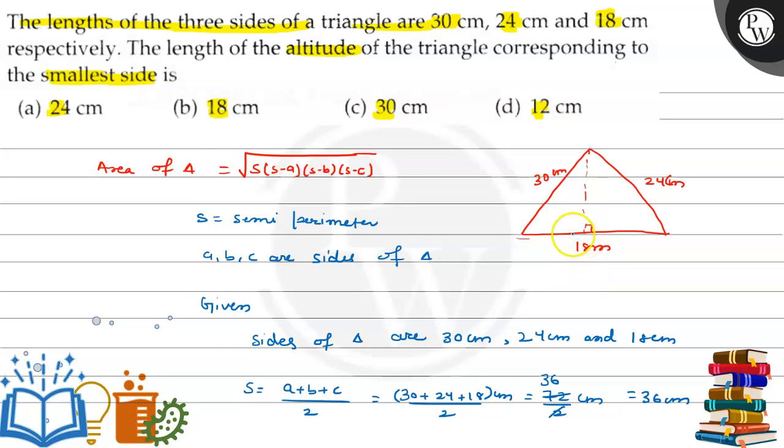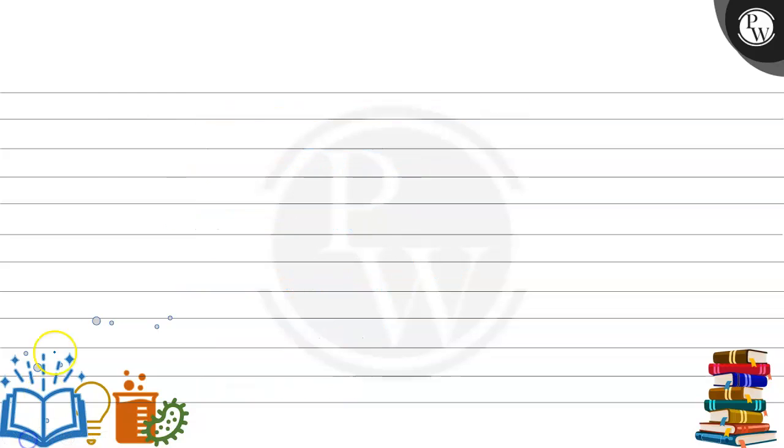Now we need to find the altitude. To find the altitude, we use the formula: Area = (1/2)×base×height. Since we have the area and know the base value, we can find the height.